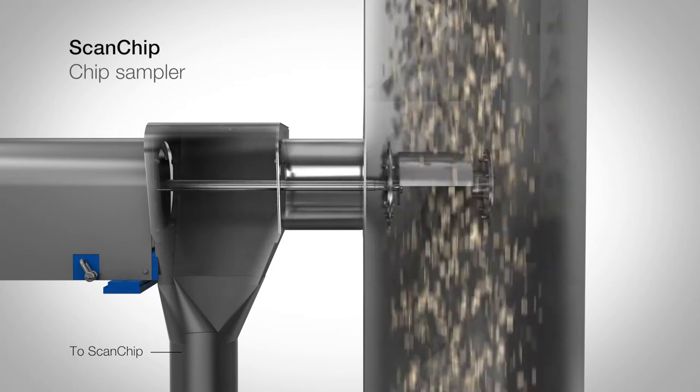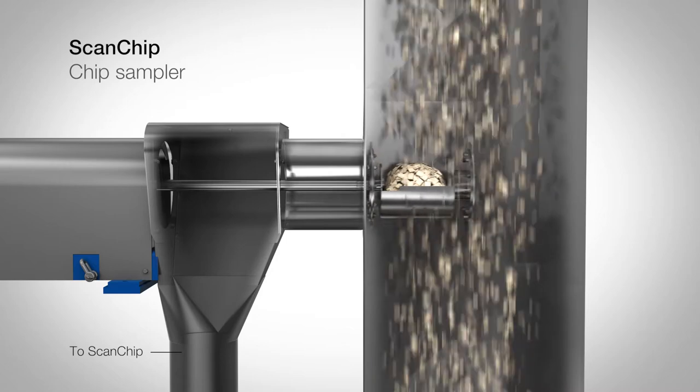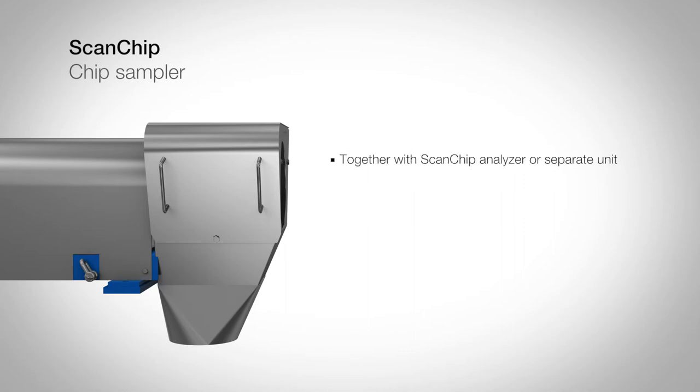The chip sampler is designed to collect representative samples from the chip flow and deliver them to the analyzer on a regular basis. The sampler is also available as a separate unit, manually controlled, and it can be placed in optional installation positions.